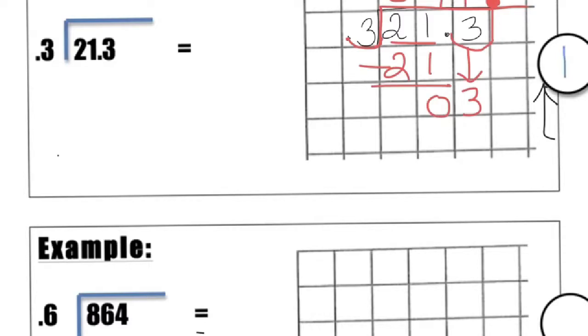3 goes into 3 one time. 1 times 3 is 3. Subtract, 0 left over. That's very easy. Our final answer is 71. So there are 71 groups of 30 cents in $21.30. That seems reasonable and makes sense. So always remember to divide just like you've been taught and to bump the decimals. Let's go ahead and do another example.